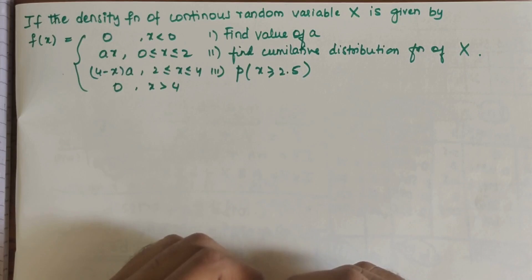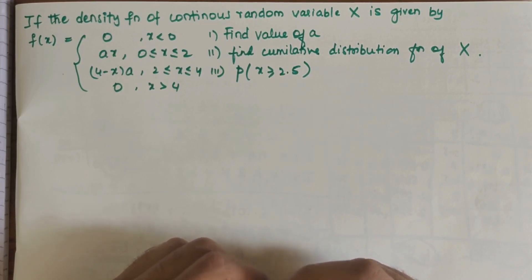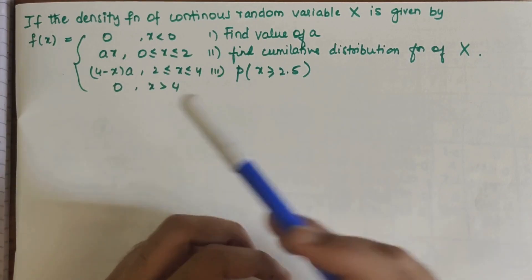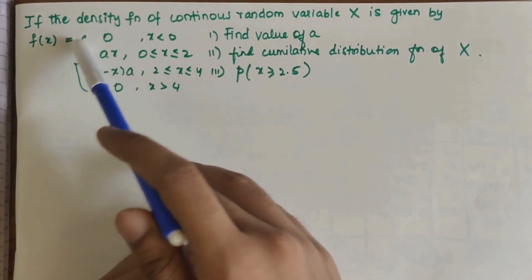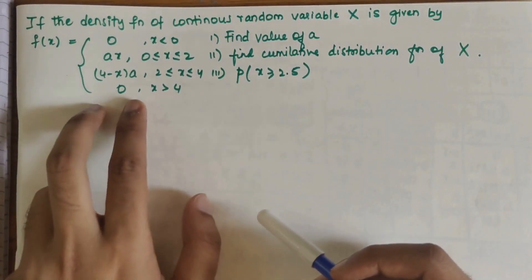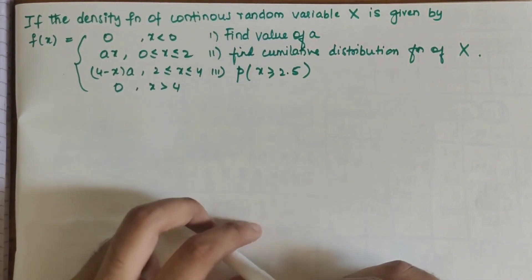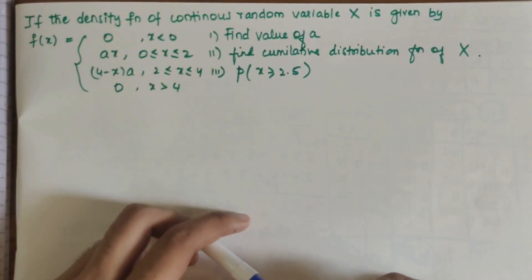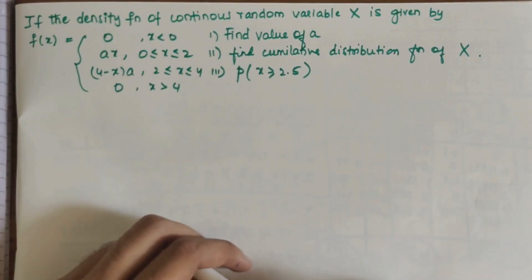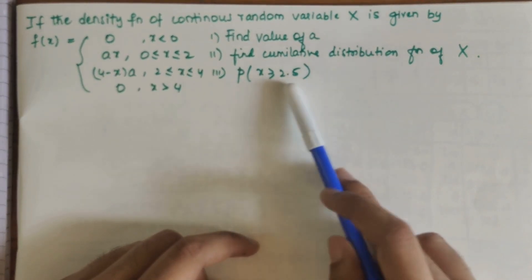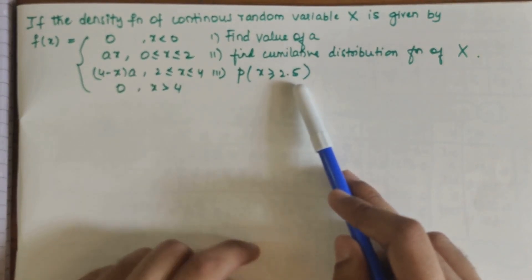We are discussing a question related to continuous probability distribution. The question says: if the density function of continuous random variable X is given by function f(x) with specified limits, the sub-questions are to find the value of a, find the cumulative distribution function of X, and find the probability when X is greater than 2.5.